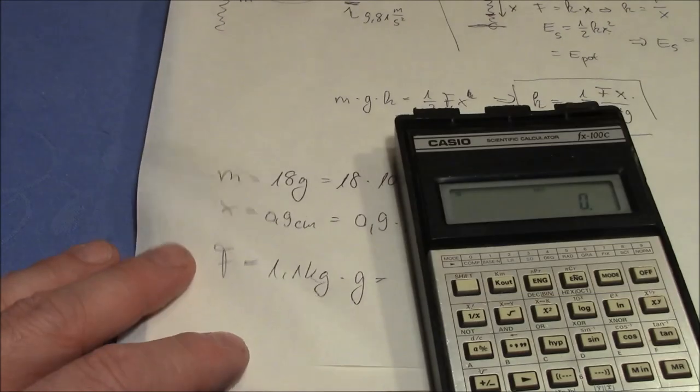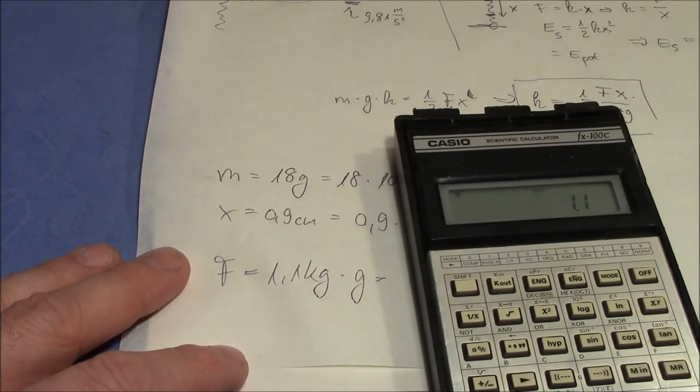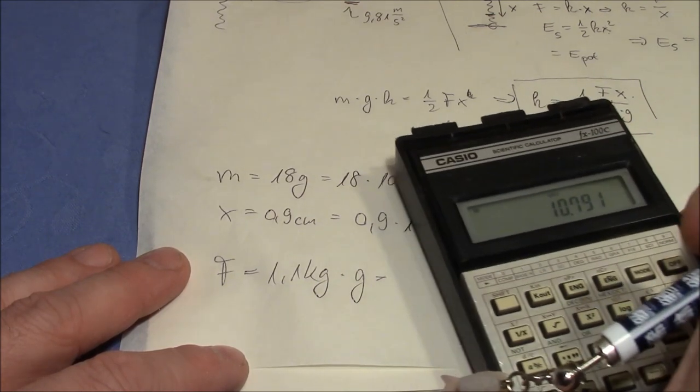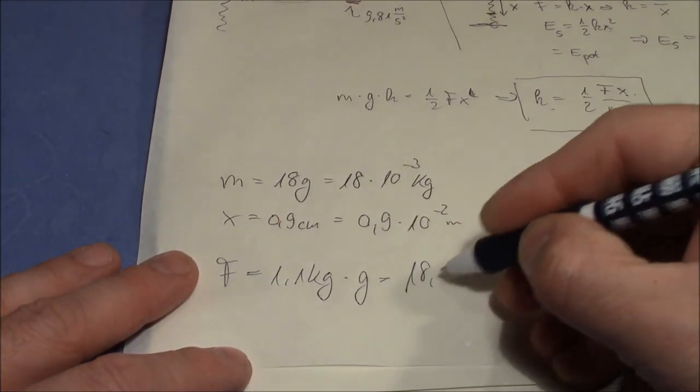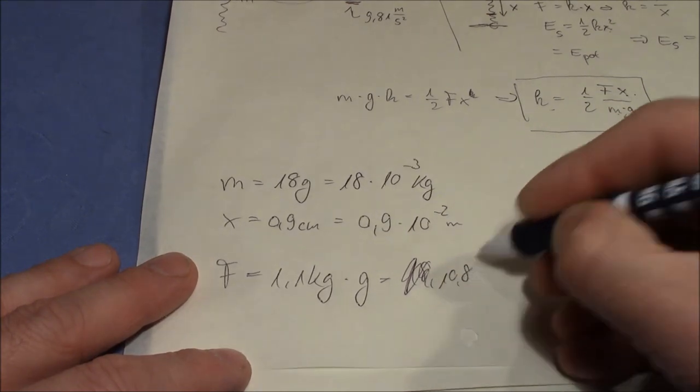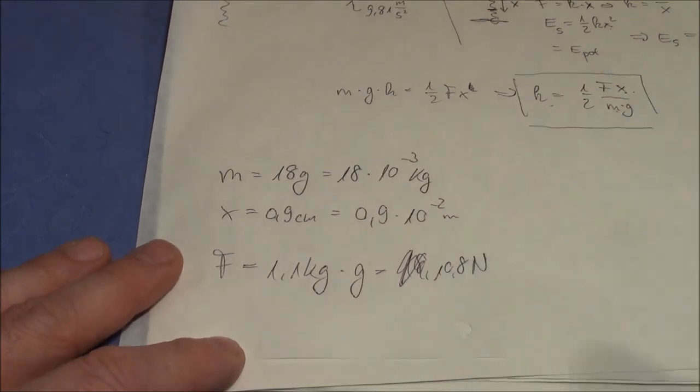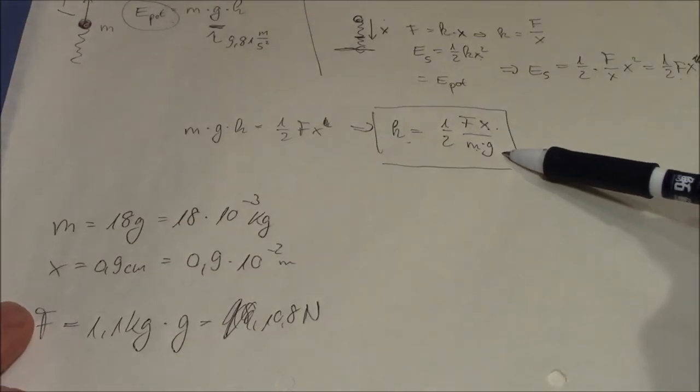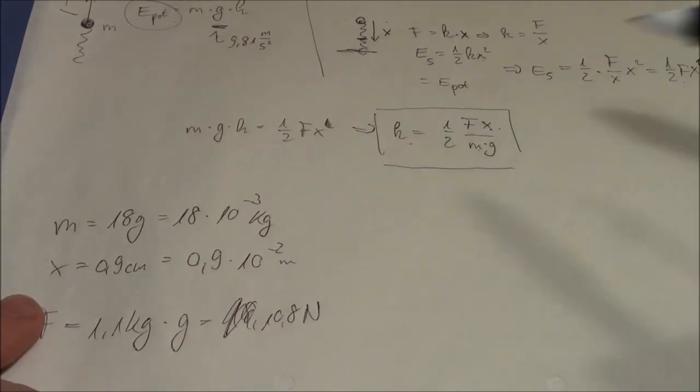That's about 1.1 kilograms. So we have the force given as 1.1 kilograms times g, of course, which equals 10.8 Newtons.